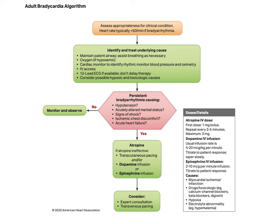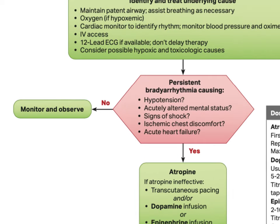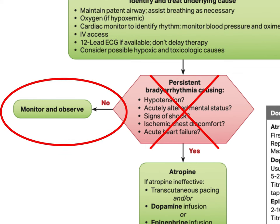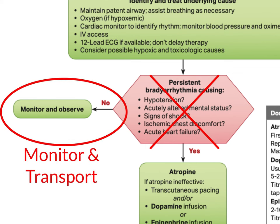Unlike the tachycardia algorithm which gives us several treatment options for stable patients, with bradycardias that are stable — meaning they do not meet the unstable criteria — the guidelines simply tell us to monitor and observe, or typically in EMS, monitor and transport. If your patient is tolerating a bradycardia well and it is not causing significant symptoms, they can most likely continue to tolerate that rhythm with relatively little risk of deterioration.